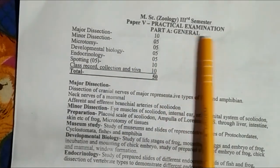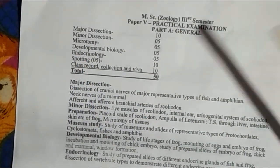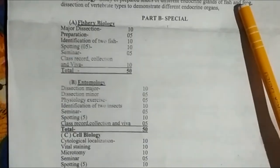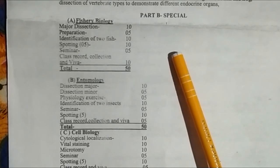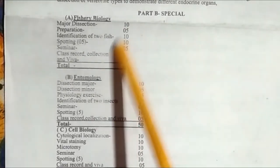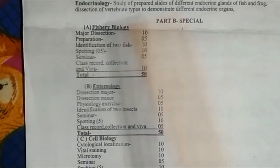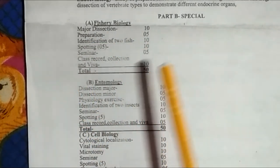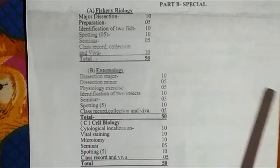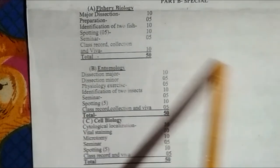Paper Fifth is the practical examination. It is divided into Part A, which is the general practical paper, and Part B, which is the selective or optional paper. Part B corresponds to the optional fourth paper you have chosen.